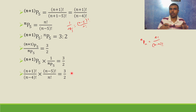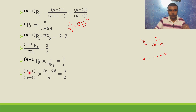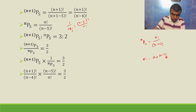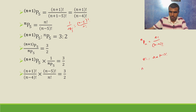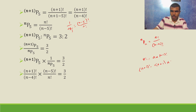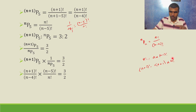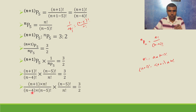Now there is a property for n factorial: n factorial is n into n minus 1 factorial. Observing the pattern, n plus 1 whole factorial is n+1 into n factorial. That means after n+1, the next integer one less than that is n, so it gets a factorial. Likewise, n minus 4 factorial can be written as n minus 4 into n minus 5 factorial.